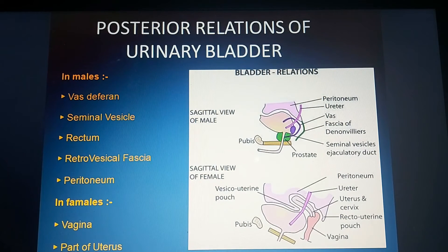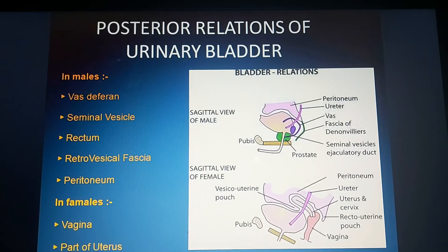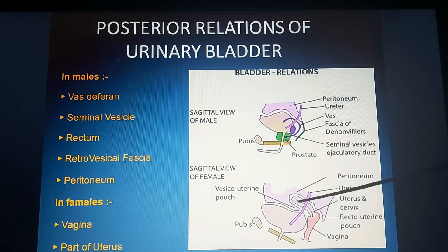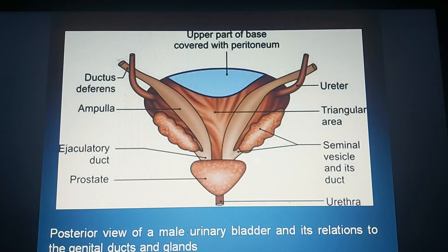Coming to the relations of the urinary bladder. The posterior relations in males are: vas deferens, seminal vesicle, rectum, recto-vesical fascia, and peritoneum.